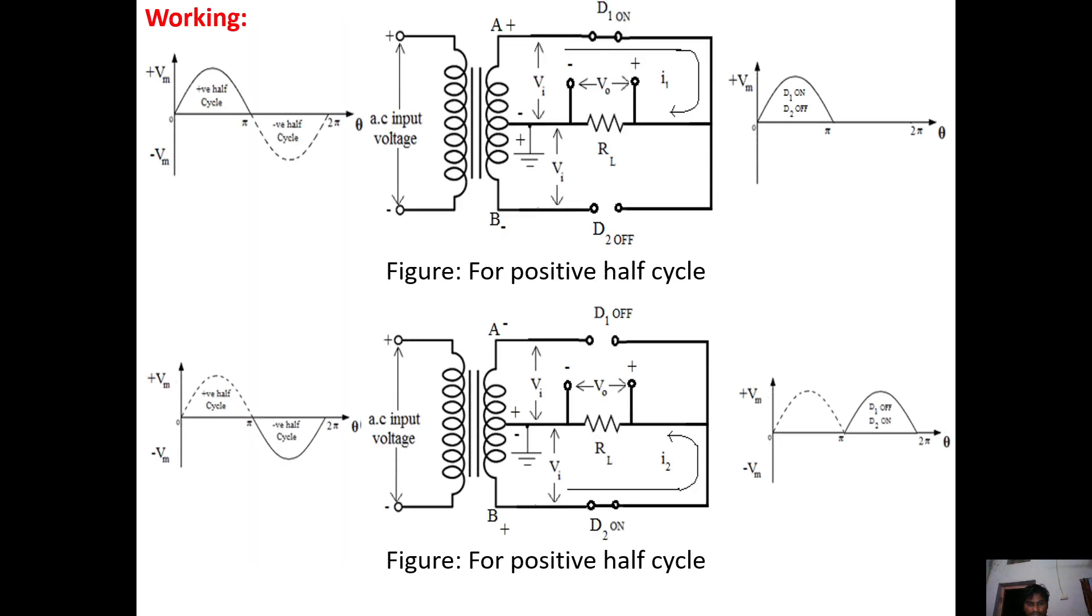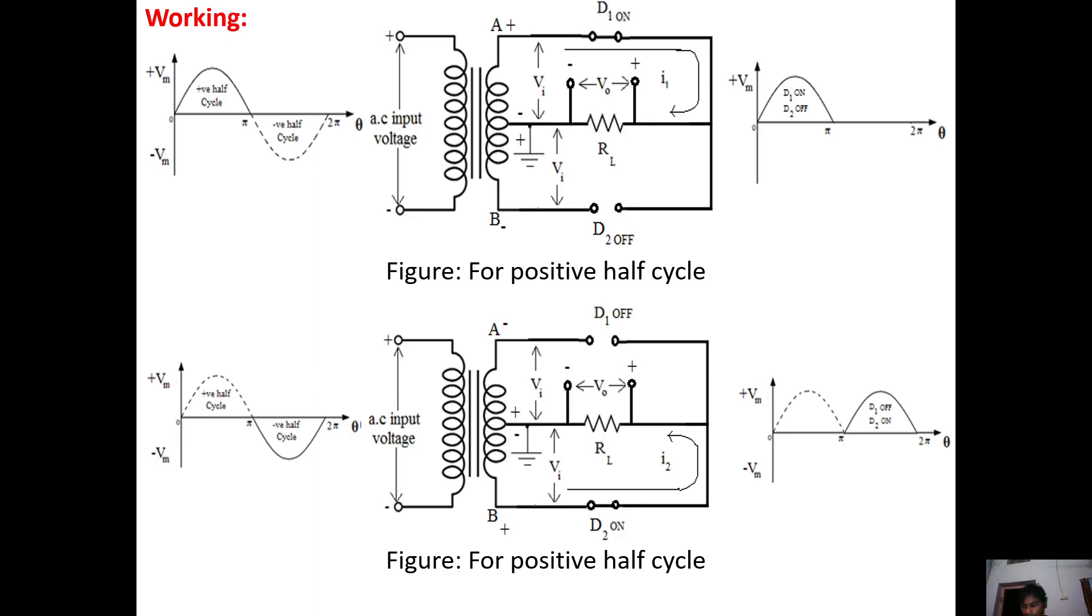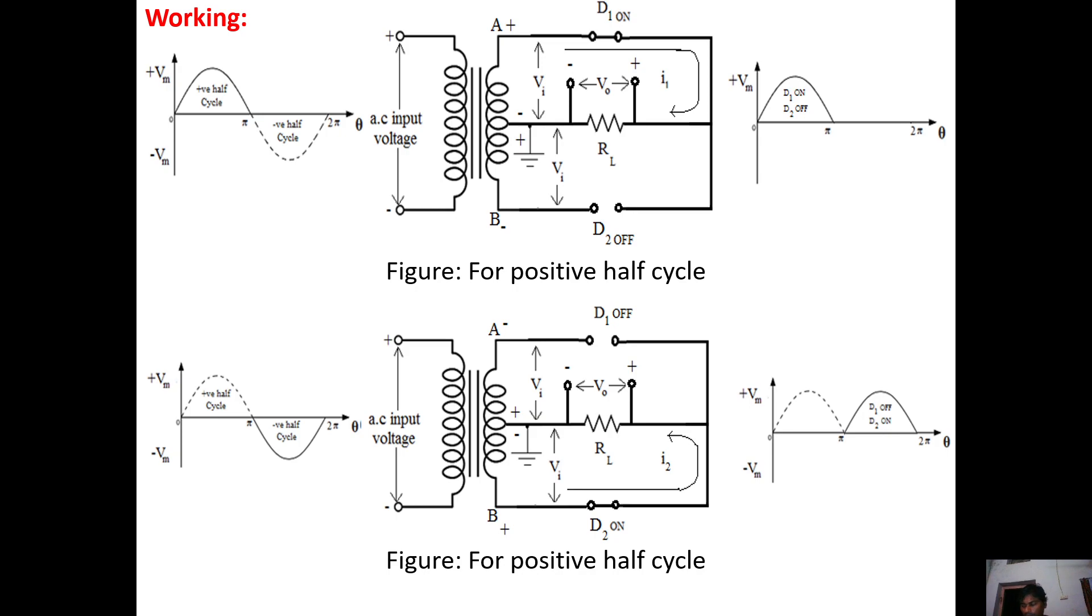During the negative half cycle, negative voltage appears at point A. As a result, diode D1 is reverse biased and turns off. At point B, the positive voltage appears. Due to this, diode D2 is forward biased and turns on, so positive voltage appears at the output.